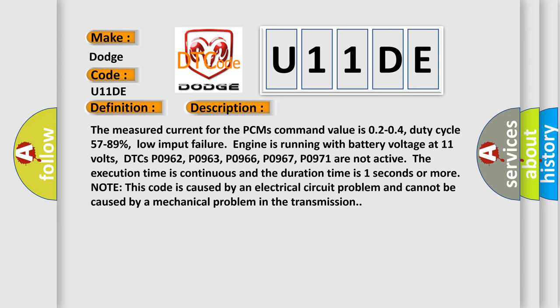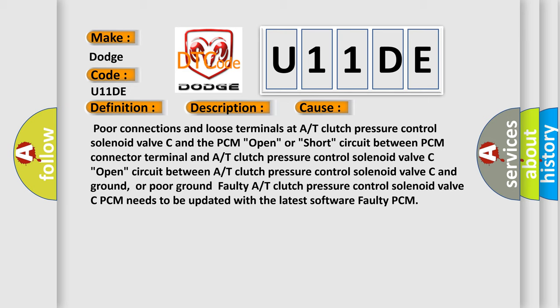This diagnostic error occurs most often in these cases: poor connections and loose terminals at A/T Clutch Pressure Control Solenoid Valve C and the PCM; open or short circuit between PCM connector terminal and A/T Clutch Pressure Control Solenoid Valve C; open circuit between A/T Clutch Pressure Control Solenoid Valve C and ground; poor ground; faulty A/T Clutch Pressure Control Solenoid Valve C; PCM needs to be updated with the latest software; or faulty PCM.